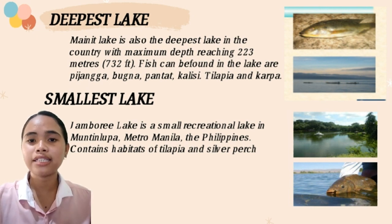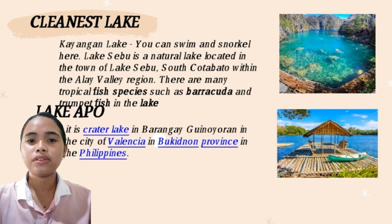The smallest lake is Jamboree Lake, a small recreational lake in Muntinlupa, Metro Manila. There are also Cayungan Lake and Lake Apo, located in Valencia province. In conclusion, learning the characteristics of lakes and rivers in the Philippines helps us understand their benefits and underlying disadvantages. By determining the flaws of these two kinds of bodies of water, it would be easy to address them and find plausible solutions, leading to a higher percentage of improvement — resulting in a healthier ecosystem for a variety of species and more job opportunities beneficial to our community and country.